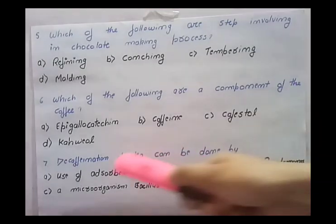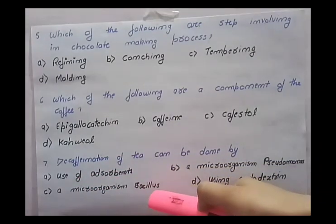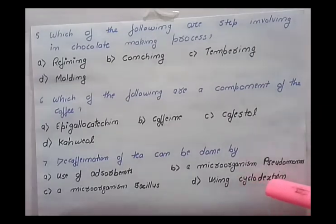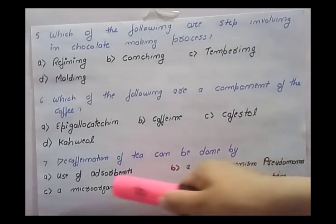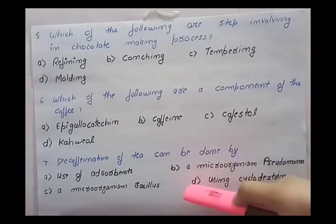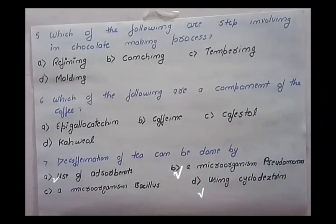Third option — microorganism Bacillus — no, Bacillus species are not used for decaffeination of tea. Fourth option — using cyclodextrin — yes, by using cyclodextrin we can decaffeinate the tea. So the right options are use of adsorbents, microorganism Pseudomonas, and using cyclodextrin. Thank you — if you like my video please like, share, and subscribe to my channel.